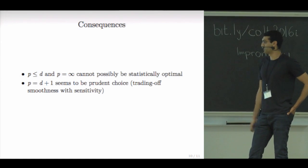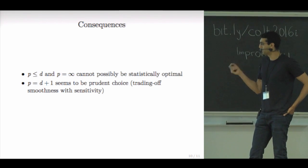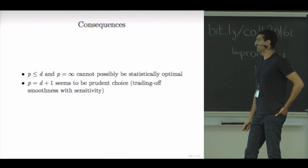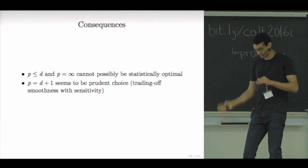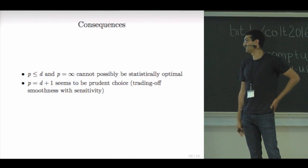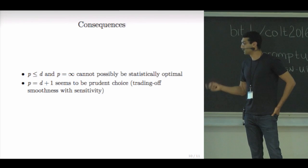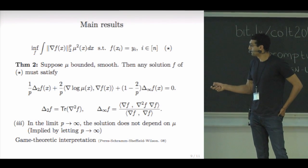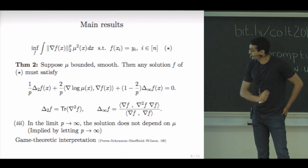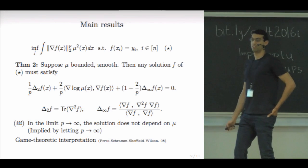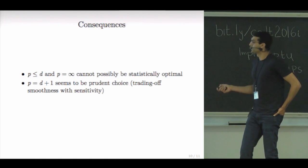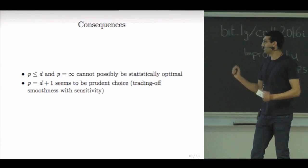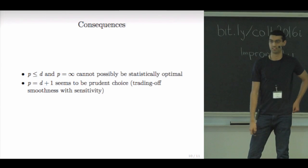So the consequences again, just to highlight, is that there is a sharp dichotomy between P smaller than the dimension and P greater than the dimension plus one. And the first bullet is to say that for P smaller than the dimension and for P equals to infinity, these two estimators cannot possibly be statistically optimal because on one hand for P smaller than the dimension, the solution is discontinuous and in the limit P equals infinity, you completely ignore the data generating density. So this can be viewed from here. When P goes to infinity, this term disappears and this term is the only one that encapsulates this data generating density. So you forget about it. So you don't use anything about the unlabeled data that you got. So one conclusion that we can draw possibly is that D plus one seems to be a prudent choice because it just trades off optimally between smoothness and the sensitivity to the underlying data generating distribution.